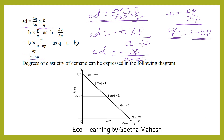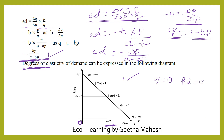So we obtain the equation: elasticity of demand equals minus BP divided by A minus BP. This is the equation for price elasticity of demand along a linear demand curve. With this equation, we can identify the degrees of elasticity of demand. When quantity is equal to zero, the price elasticity of demand is equal to infinity.